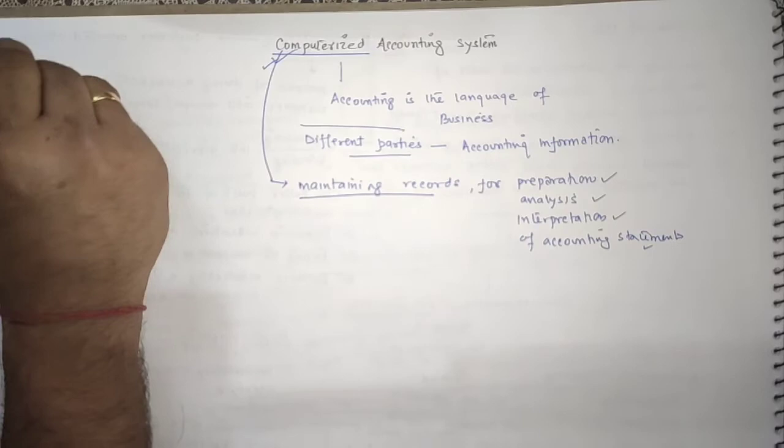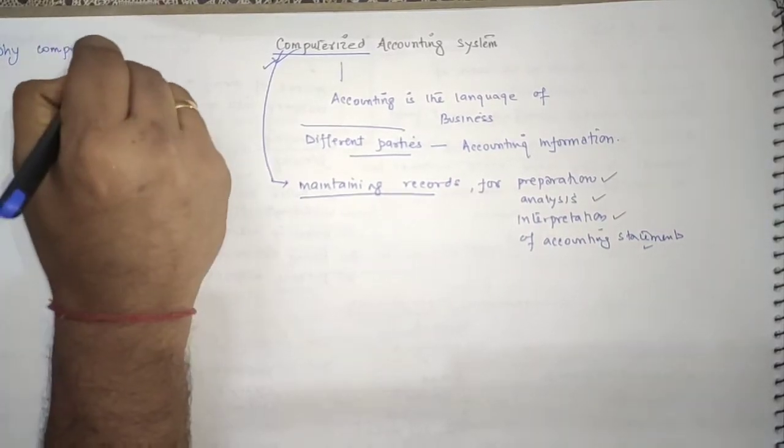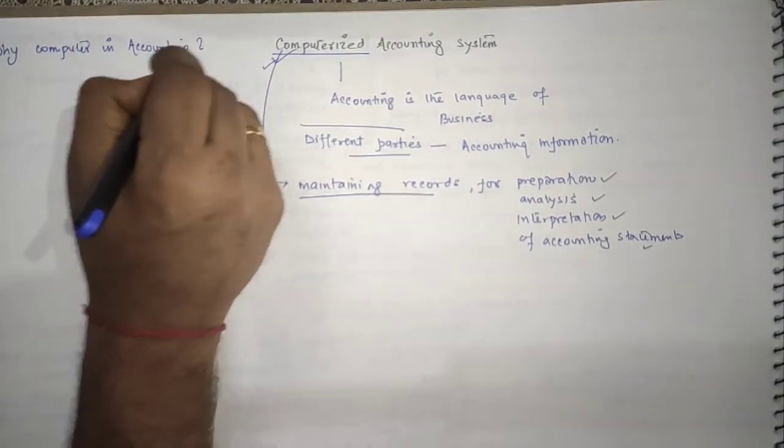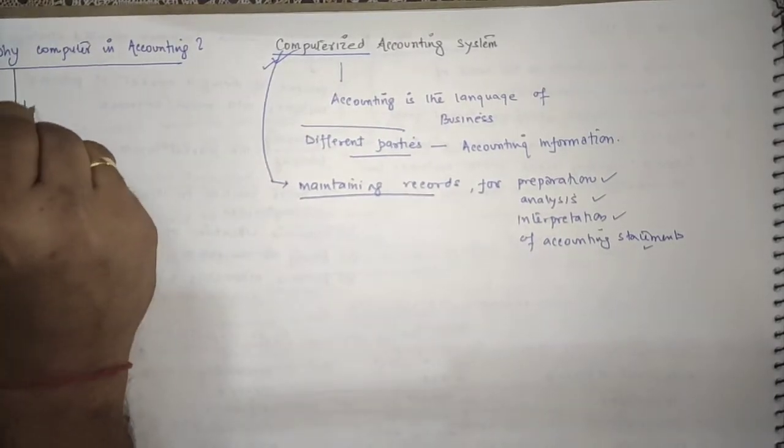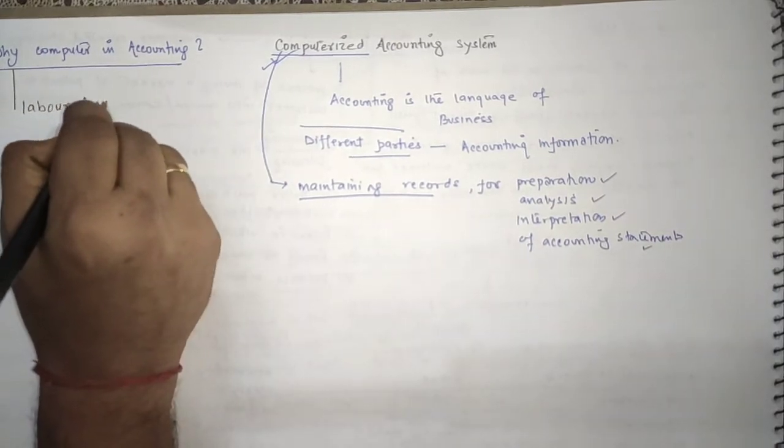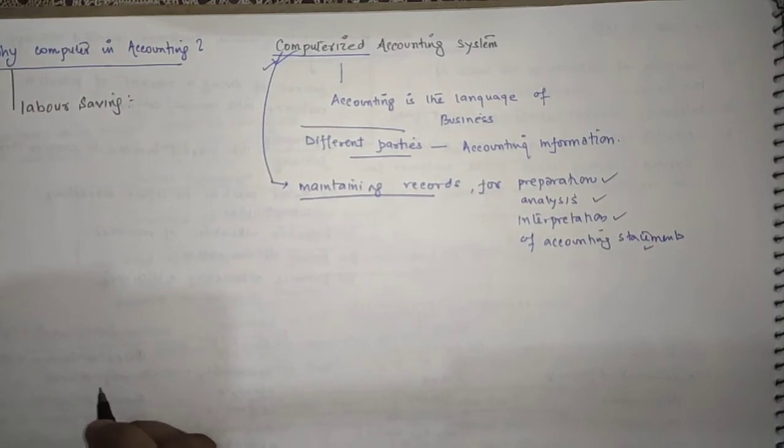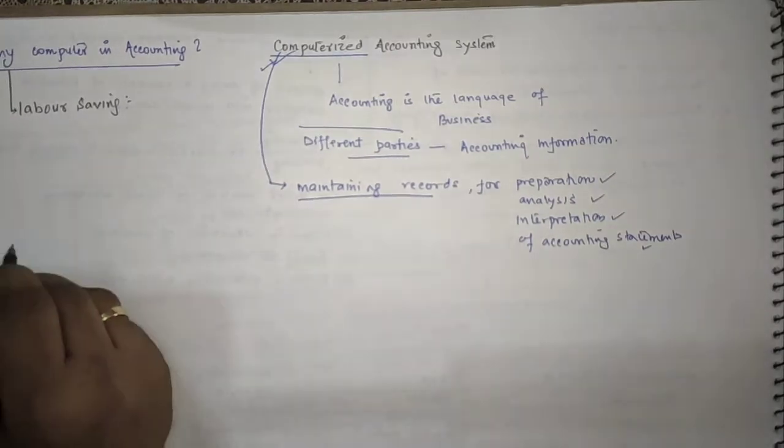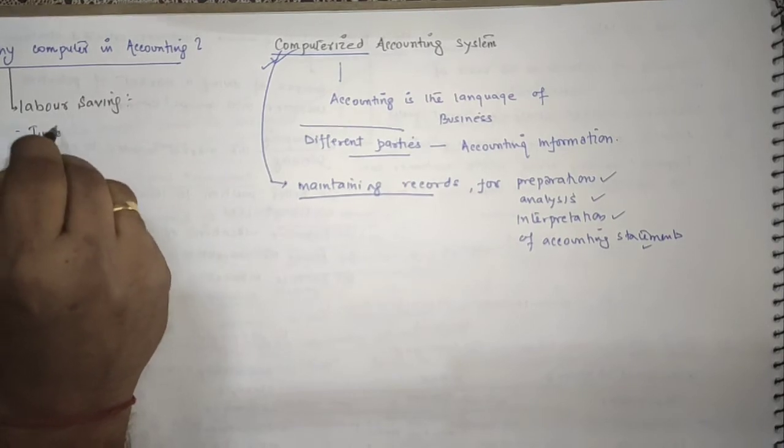Now, why computer in accounting? Number one, it is labor saving. As we know that computer saves time and also labor and hard work. All these things can be done with the help of computer, so it is labor saving. Secondly, it is time saving.